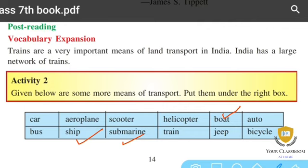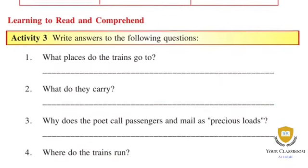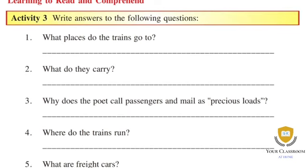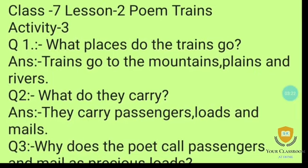Fill these columns with the correct transport types. Next is Learning to Read and Comprehend - Activity 3: Write answers to the following questions. Question 1: What places do the trains go? Trains go to the mountains, plains, and rivers.